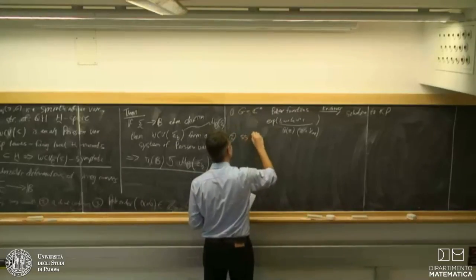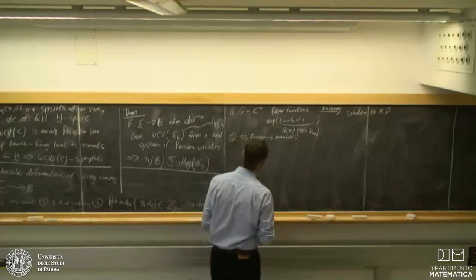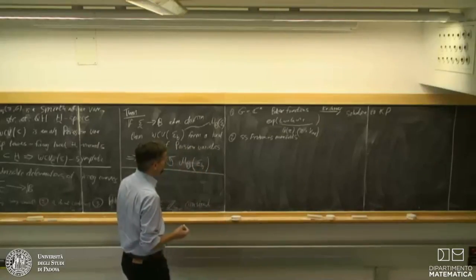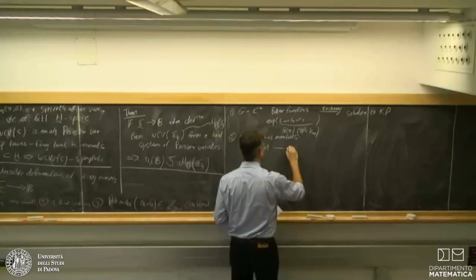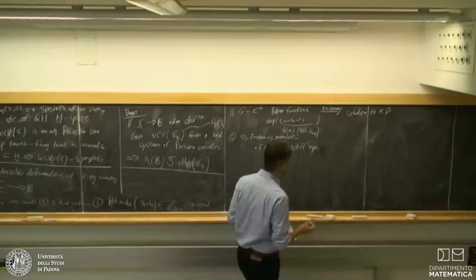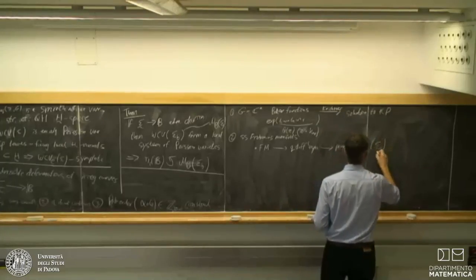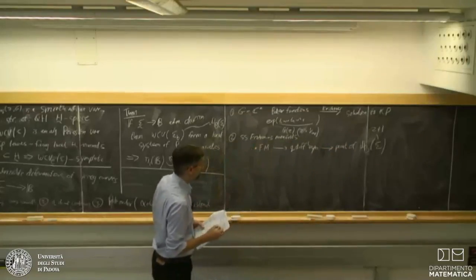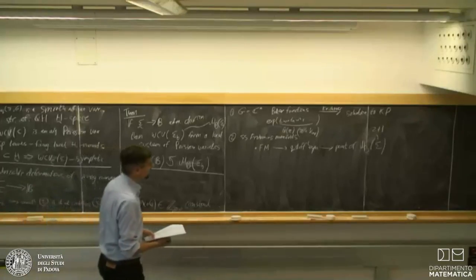The second example is semi-simple Frobenius manifolds, particularly through the work of Dubrovin. These give a way to classify two-dimensional topological quantum field theories via non-Abelian Hodge theory. Dubrovin's work says that if we have a Frobenius structure, we look at the quantum differential equation — a connection on a bundle over P^1 with a pole of order 2 and a pole of order 1. This is a point in some irregular Betti space, and the map from here basically classifies the Frobenius structure, analogous to how Abelian Hodge theory classifies K3 surfaces.